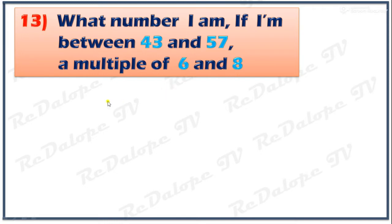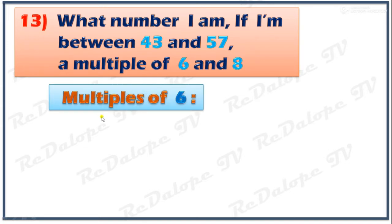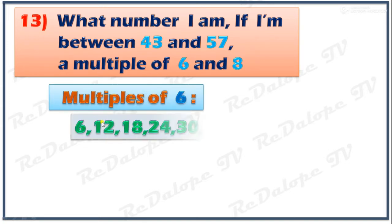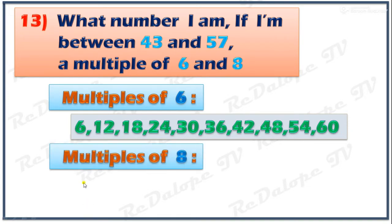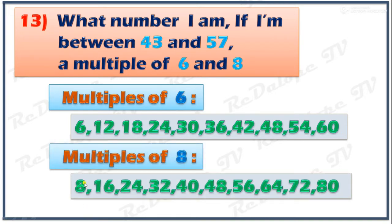The multiples of 6 are: 6, 12, 18, 24, 30, 36, 42, 48, 54, 60, and so on. For the multiples of 8, we have 8, 16, 24, 32, 40, 48, 56, 64, 72, 80.